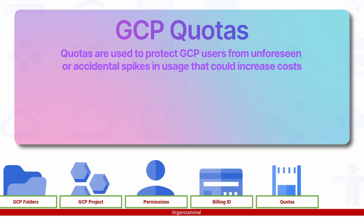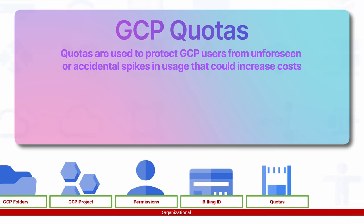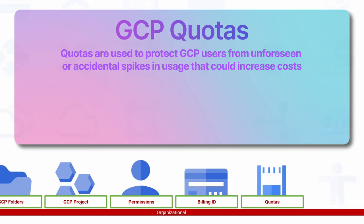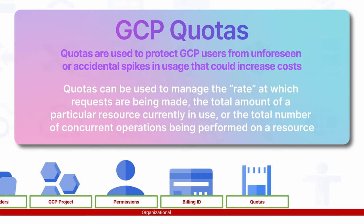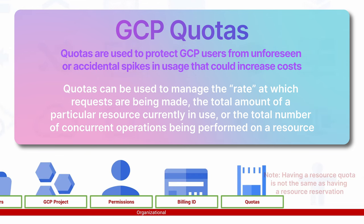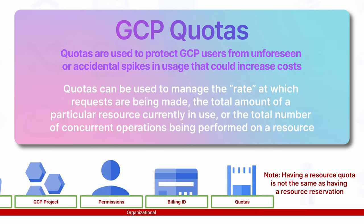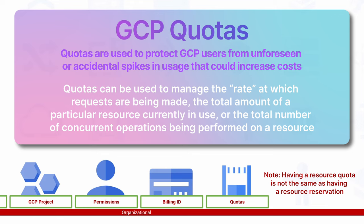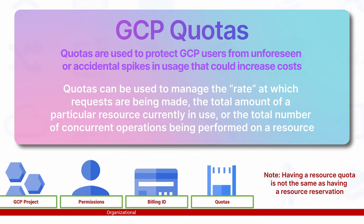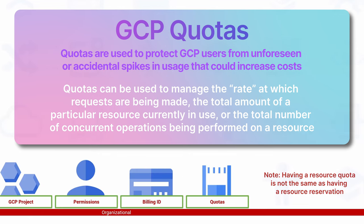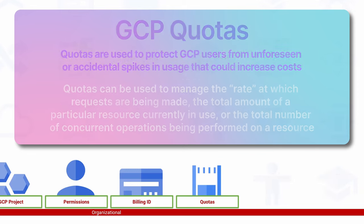Quotas are used to protect GCP users from unforeseen or accidental spikes in usage that could increase costs. Quotas can be used to manage the rate at which requests are being made, the total amount of a particular resource currently in use, or the total number of concurrent operations being performed on a resource.